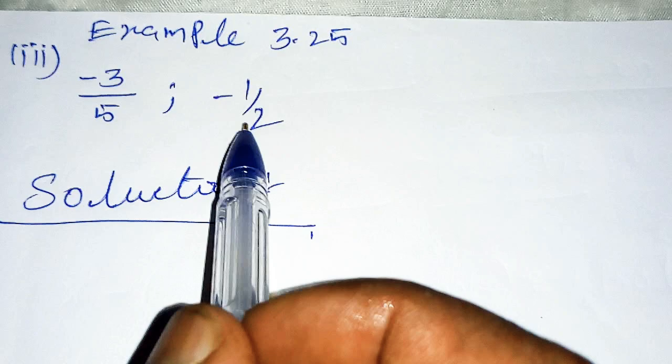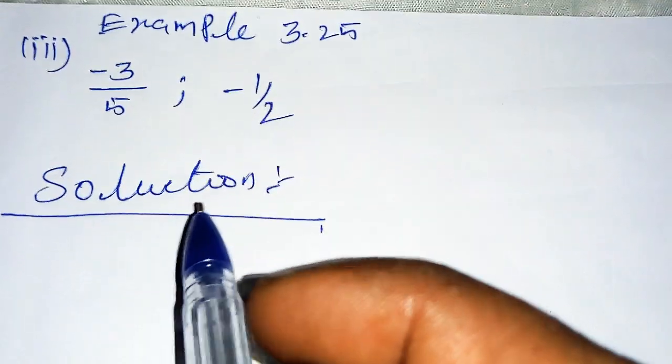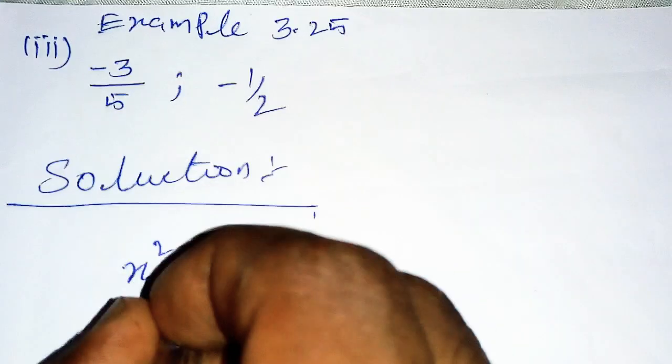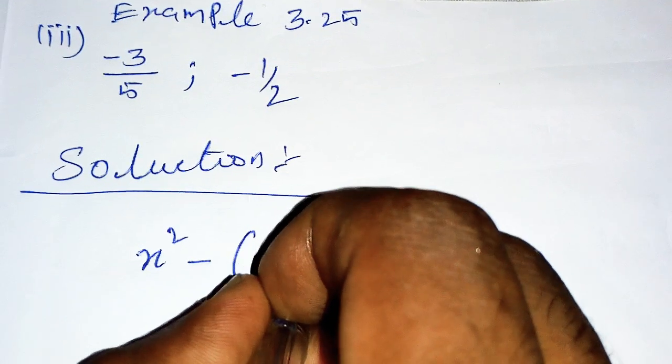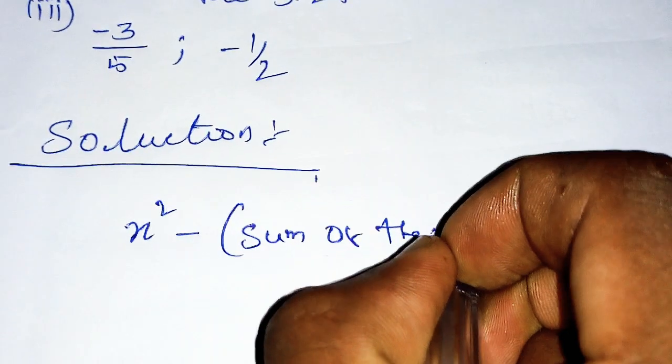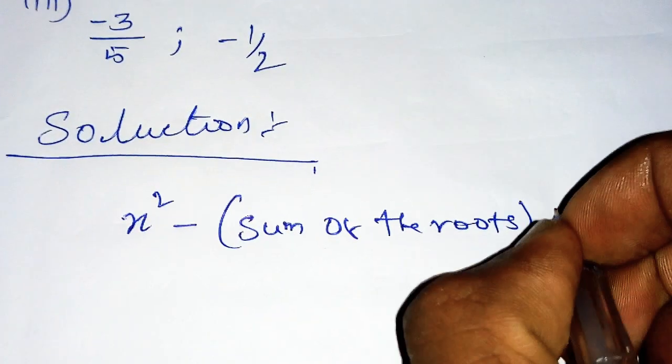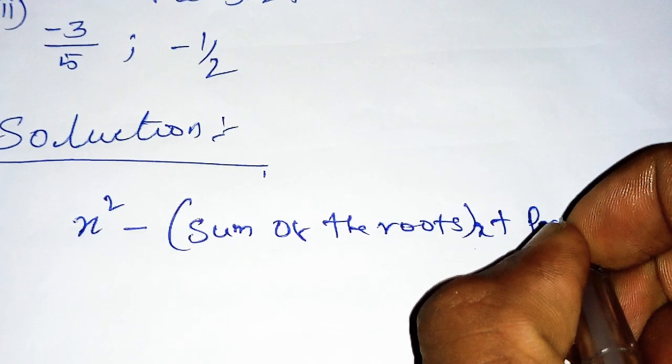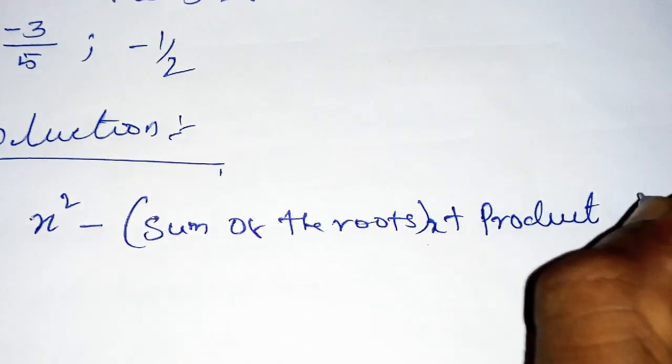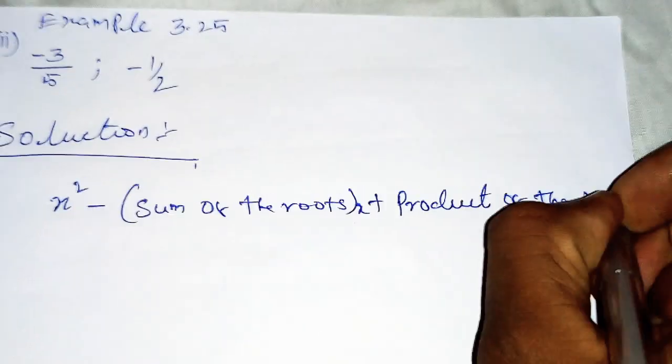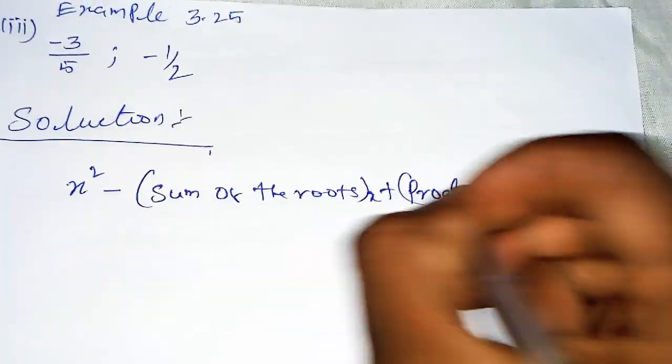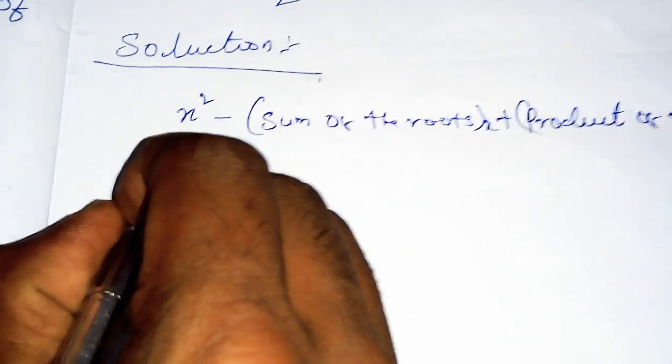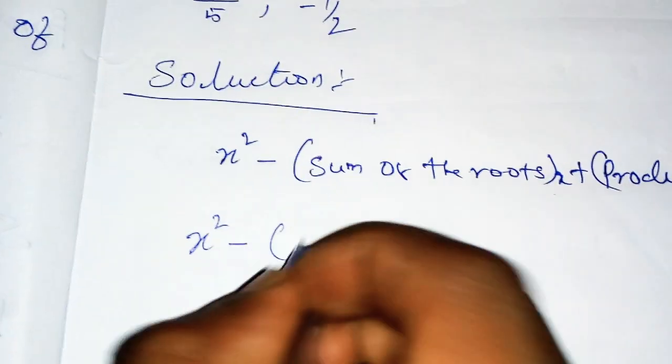Solution: The general form of the quadratic equation is x² minus (sum of the roots) times x plus (product of the roots) equals zero. We're going to substitute the values here: x² minus the sum of the roots...